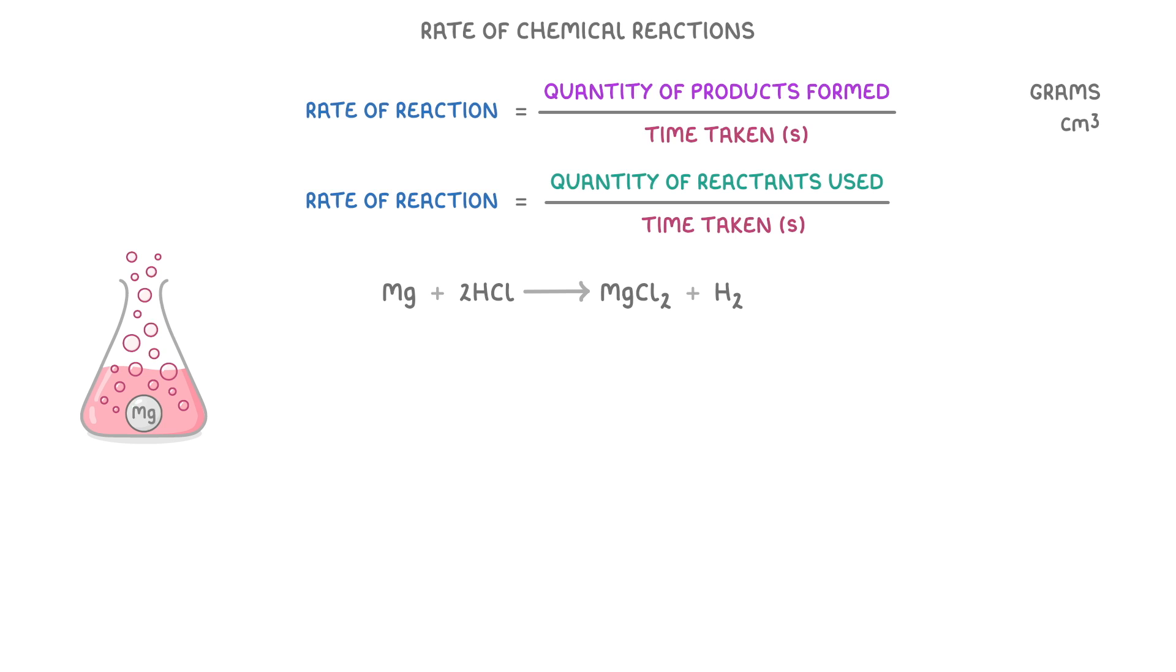Now, these rates of reactions that we've calculated so far are actually the average or mean rates of reaction throughout the entire reaction. In reality, the rate would start off really fast, when there are loads of reactants that can react together, and then slow down as the reaction progresses, and the reactants get used up.